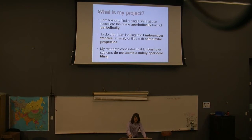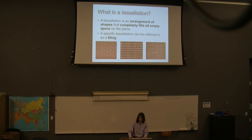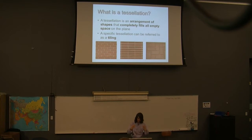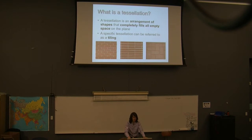First on the list of vocabulary terms to define is a tessellation — an arrangement of shapes that completely fills all empty space on a plane. Squares can be packed together with no space left, but circles will always have gaps between them. So circles don't tessellate, while squares do. A tiling is a specific instance of a tessellation. On screen you see three different tilings of a brick pattern: a rectilinear one where all edges line up, a fishbone pattern, and a staggered pattern.